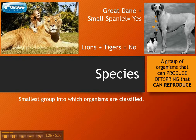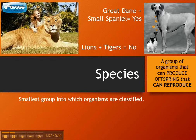So we know that a lion and a tiger are not the same species because they cannot have children who can then reproduce. They cannot have grandkids. The line ends with their liger offspring.